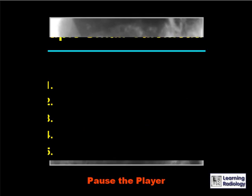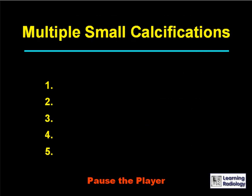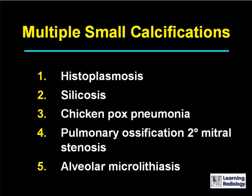Here's the next differential. The differential is multiple small calcifications in the lung. There are five causes. The causes of multiple small calcifications in the lung include histoplasmosis, silicosis, chickenpox pneumonia, pulmonary ossification secondary to mitral stenosis, and rarely alveolar microlithiasis.